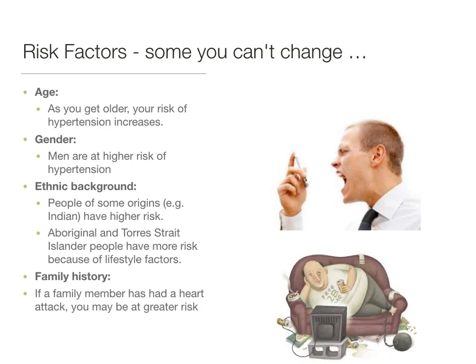Let's look now at the risk factors — first, those that you can't change. Age is one example; as you get older your risk of hypertension increases. If you're male, you're already at a higher risk based on your gender. Ethnic background can also have some effect, as people from the Indian subcontinent have a higher risk, and in Australia, Aboriginal and Torres Strait Islander people have an increased risk related to lifestyle factors. Family history also plays a part: if a member of your family has had heart disease, you may be at greater risk of hypertension.